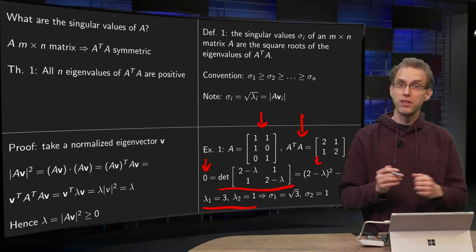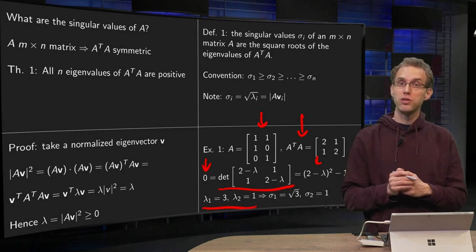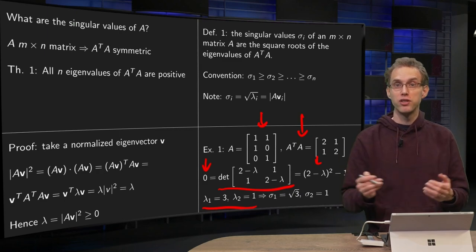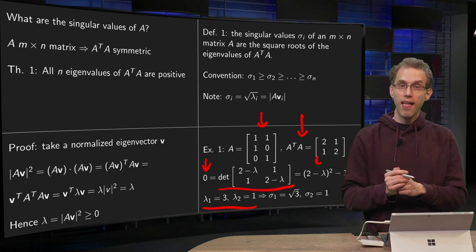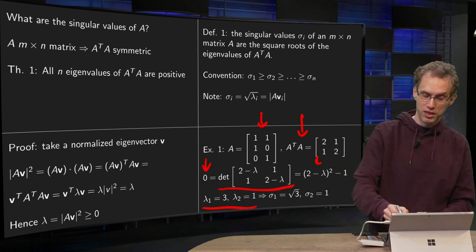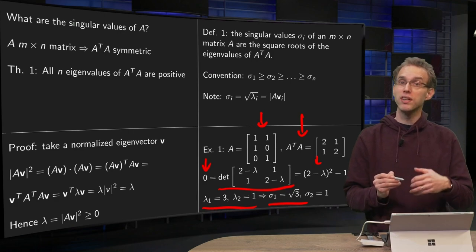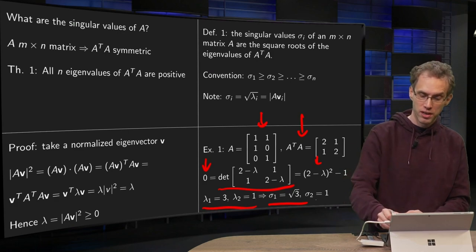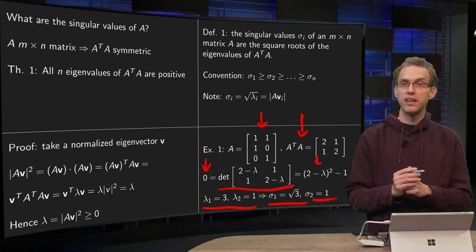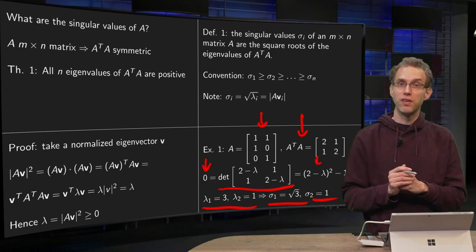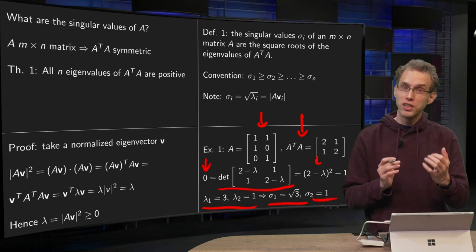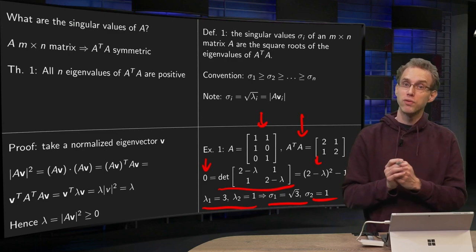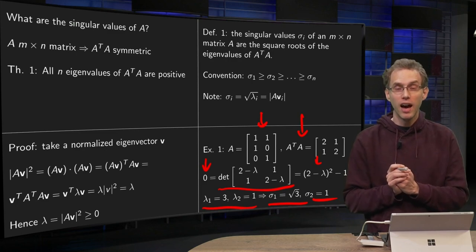Then we have the singular values as the square roots of 3 and 1, giving sigma_1 equals square root of 3 and sigma_2 equals 1. As the convention dictates, we put sigma_1 equals square root of 3 first — the largest — and then sigma_2 equals 1, the smallest. So our singular values are square root of 3 and 1.